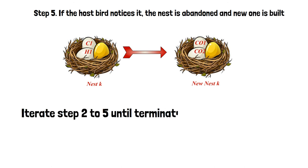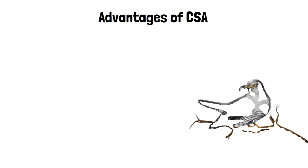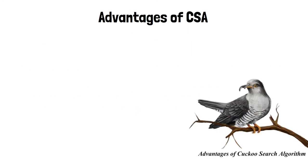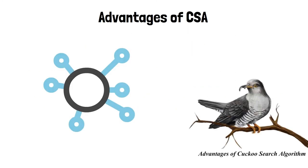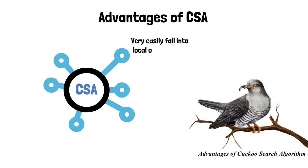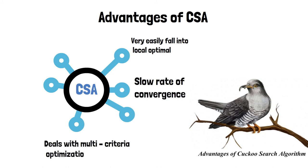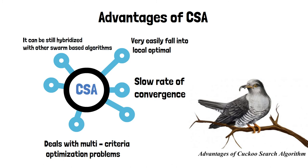Iterate steps 2 to 5 until the termination criteria is satisfied. The advantages of cuckoo search algorithm are: easier application and fewer tuning parameters, very easily avoids falling into local optima, slow rate of convergence, deals with multi-criteria optimization problems, can be hybridized with other swarm-based algorithms, and is easy to implement with simplicity.